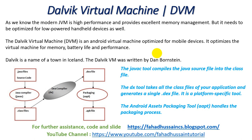As I have told you before when we discussed the architecture, the modern JVM is high performance and provides excellent memory management. Our JVM is high performance and its responsibility is to manage memory and utilize it in applications. But it needs to be optimized for low-powered handheld devices as well — meaning it must be able to handle low-powered devices.